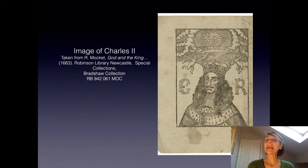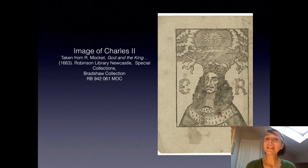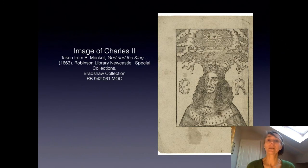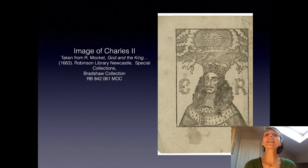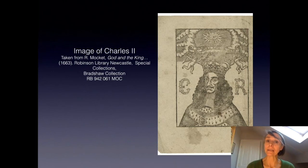The English Revolution of 1640 to 1660 was a source of inspiration for the American and French Revolutions of the late 18th century. Later revolutionaries both recognised what had happened in England in the 1640s and 50s as being a revolution and drew on the writings and practices of those times in their own campaigns.